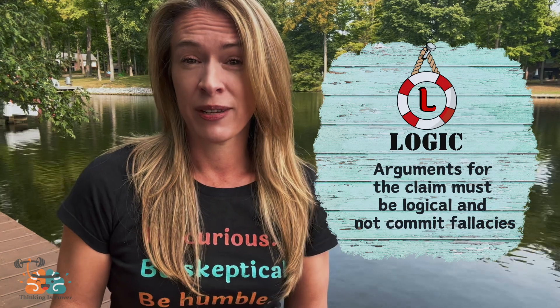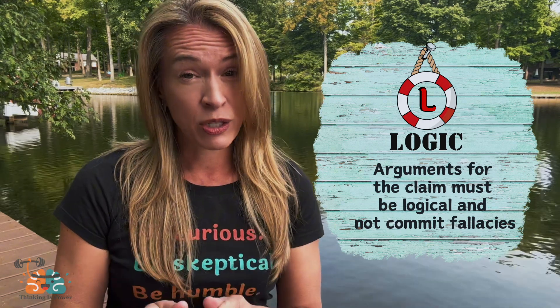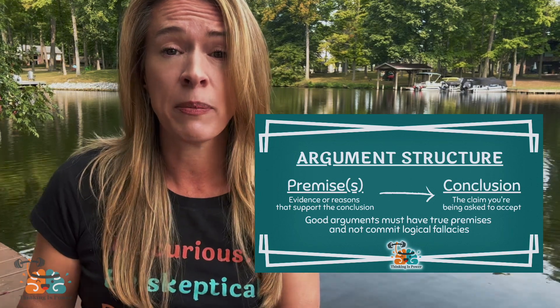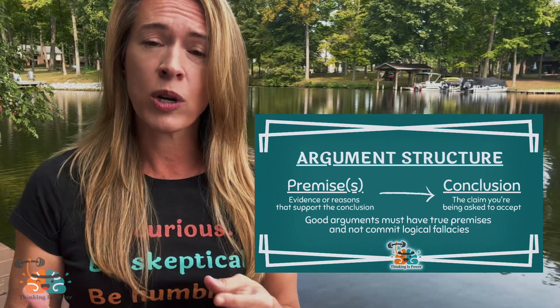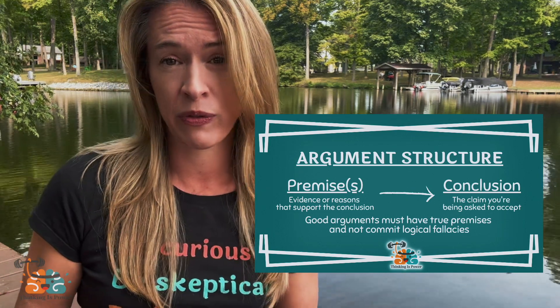The rule of logic. Arguments for a claim must be logical and not commit logical fallacies. An argument consists of a conclusion and one or more premises that provide evidence, reasons, or support for the claim. A lot of arguments also contain hidden premises — unstated assumptions required for the conclusion to be true — and so we must identify them when evaluating arguments.